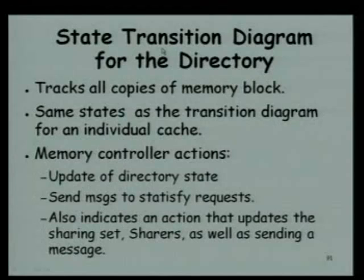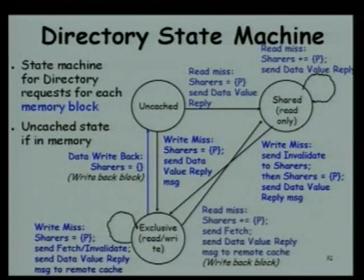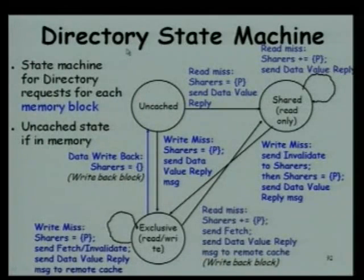The directory indicates who has access using the sharing set, which says which nodes are having the data. This is what the directory maintains. There are two components of this protocol. One is the actions to maintain coherency by the memory controller, and the other part of the protocol runs at the local nodes. The local nodes also have to do certain things based on specific requests, requiring a controller circuit. The sharers are tracked only at the directory, not with the other nodes.